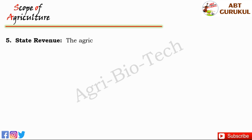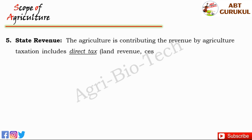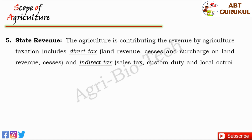Agriculture also contributes to the state revenue. Agriculture contributes revenue through agricultural taxation, including direct tax and indirect tax. Direct tax includes land revenue, cesses and surcharge on land revenue, cesses on crops, and agricultural income tax. Indirect tax includes sales tax, custom duty, and local octroi, which farmers pay on purchase of agricultural inputs.